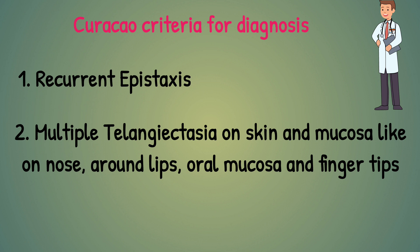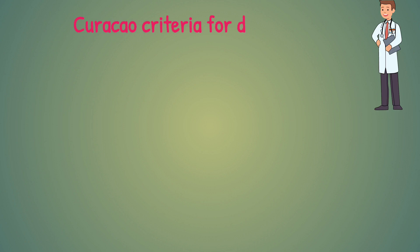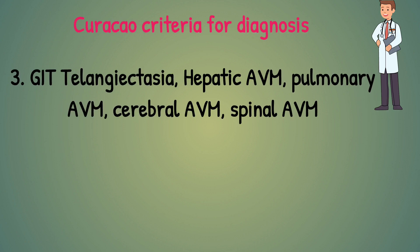Number three is GI telangiectasia, as well as AV malformations: hepatic AV malformation, pulmonary AV malformation, cerebral AV malformation, and spinal AV malformation. Imaging is usually used to detect AV malformations.